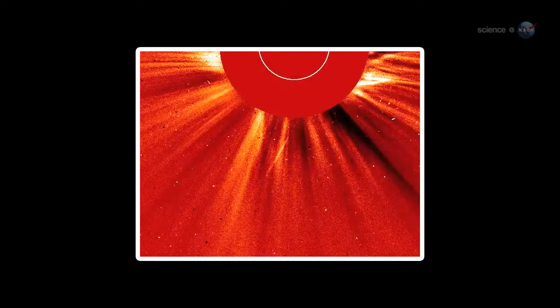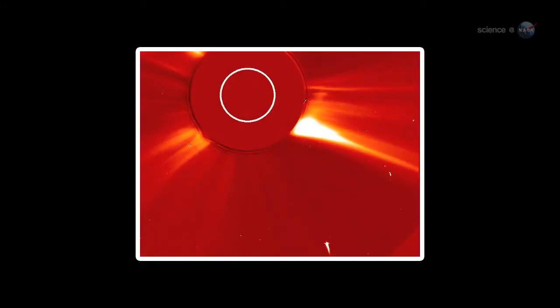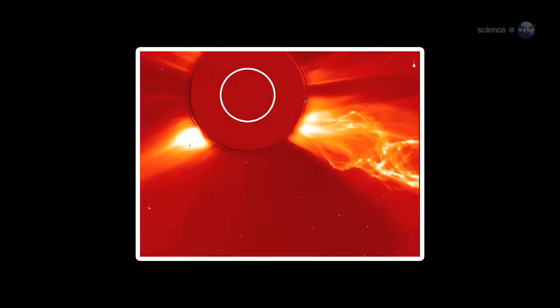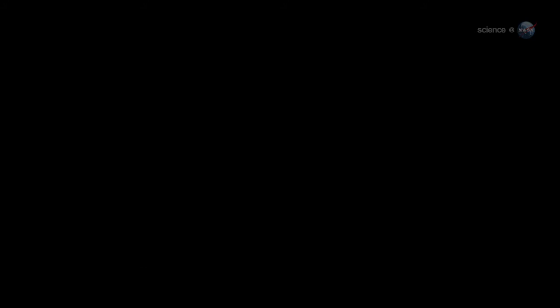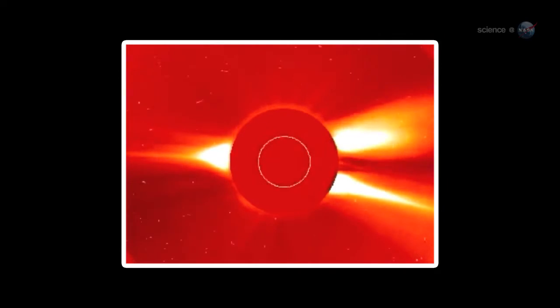Sungrazing comets aren't a new thing. In fact, the Orbiting Solar and Heliospheric Observatory, SOHO, watches one fall toward the Sun and evaporate every few days. These frequent kamikaze comets are thought to be splinters of a giant comet that broke apart hundreds of years ago.